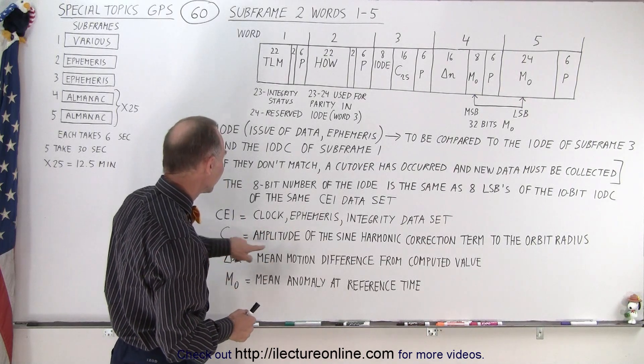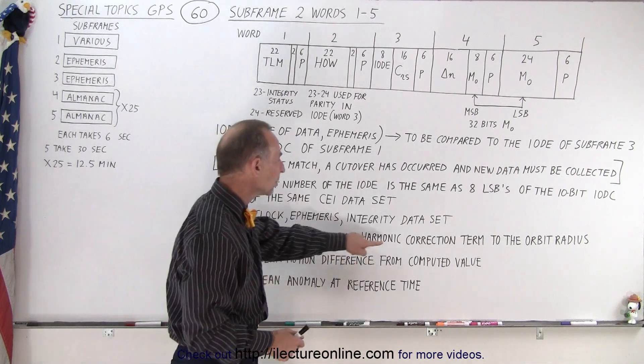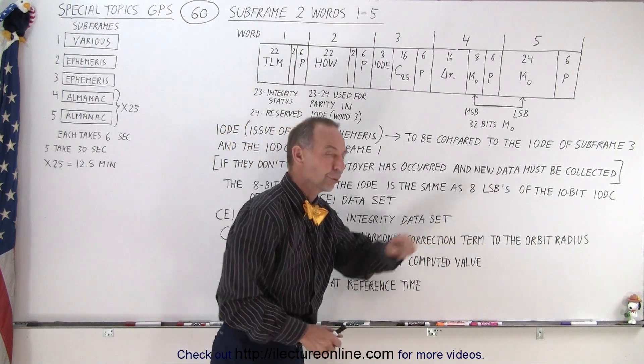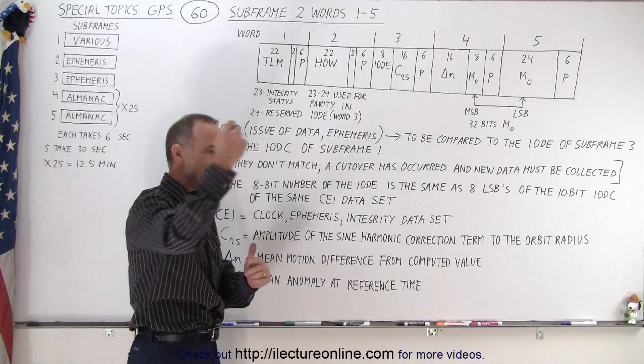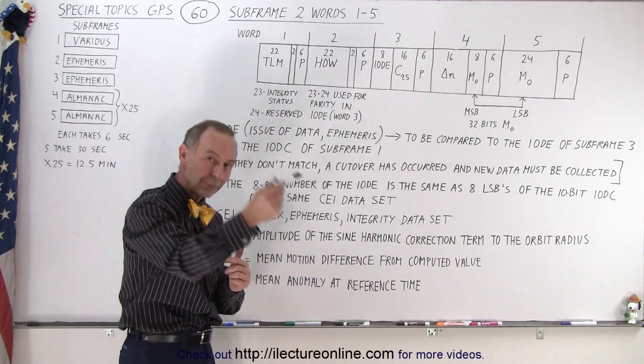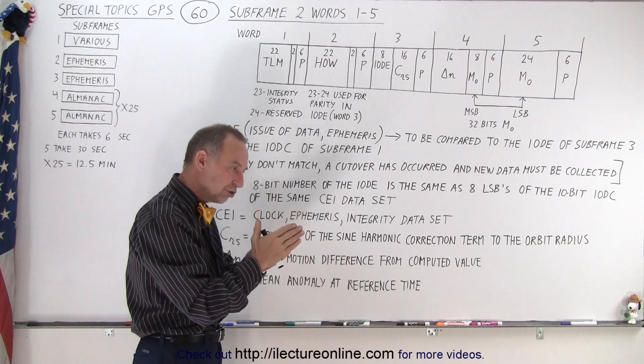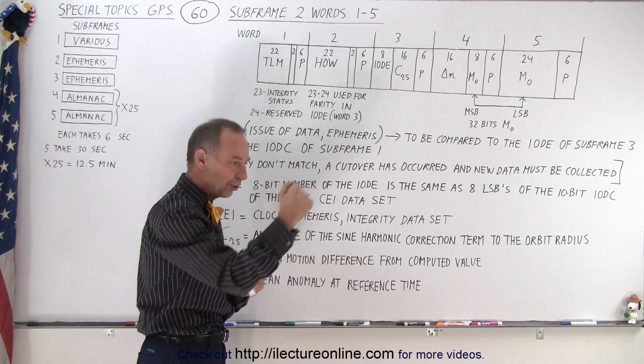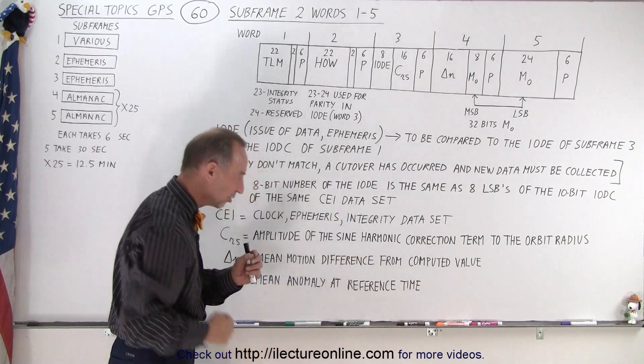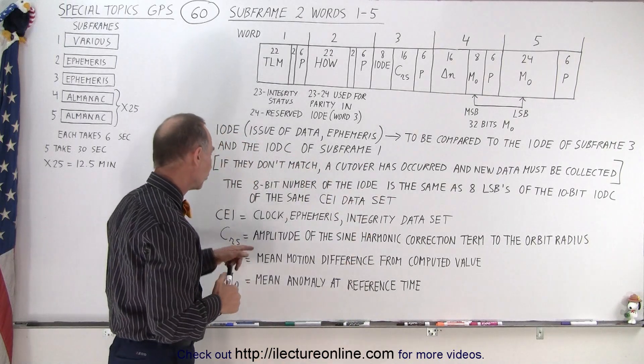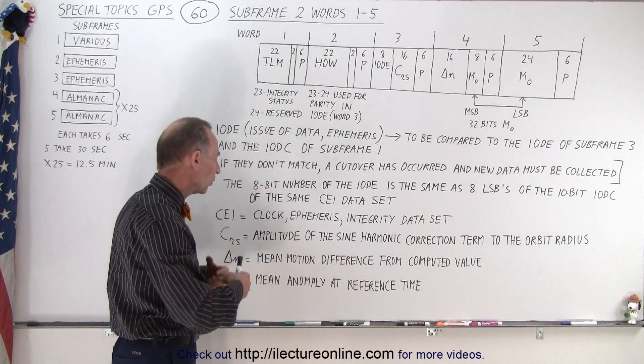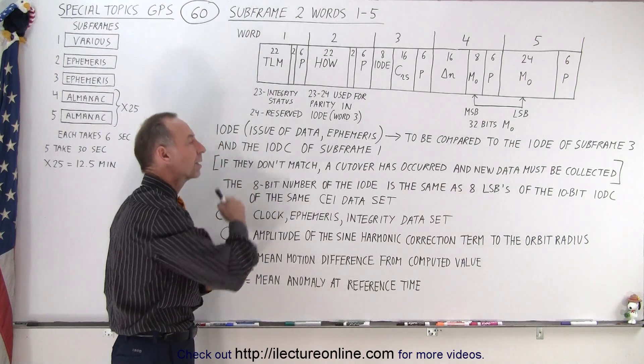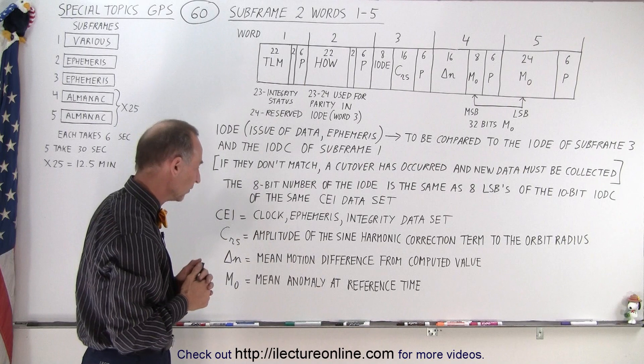The C sub RS is the amplitude of the sine harmonic correction term to the orbit radius. So obviously the orbit is not a circular orbit, it's an elliptical orbit and it's always changing. That's why the distance to the center of the Earth is always going to be changing as the satellite goes around. And so we have to have a correction term for that and the CRS is what we call the amplitude of the sine harmonic correction term to that orbit radius.